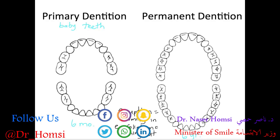By six years we're starting to get eruption of the permanent teeth, and it takes until about age 12 for the last baby teeth to be exfoliated and completely replaced by permanent teeth. This transition period from about six to twelve years old is called the mixed dentition — when we have a mix of both primary and permanent teeth. It takes a little longer for the third molars to come in; they could be erupting as late as age 18, 19, or 20.